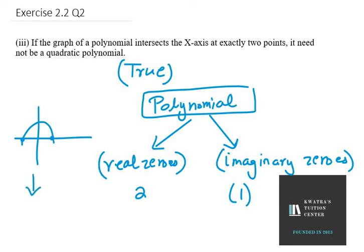Why? Because it can be any other polynomial. You must remember that zeros could be in the form of real numbers or imaginary zeros. So that's your answer for the third part.